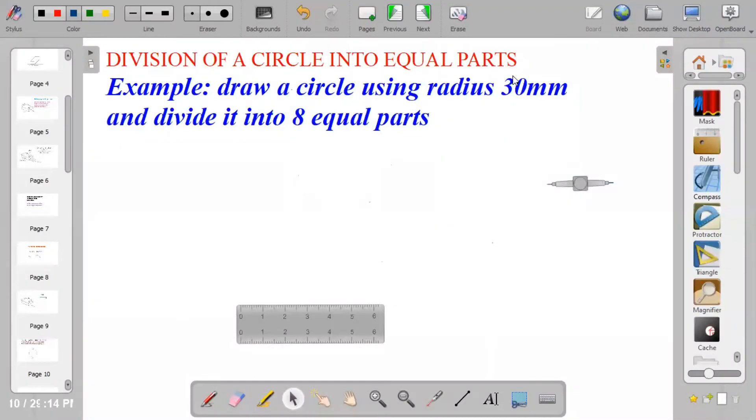Division of a circle into eight equal parts. Before I proceed, kindly press on the subscribe button. Draw a circle using radius 30 mm and divide it into eight equal parts.